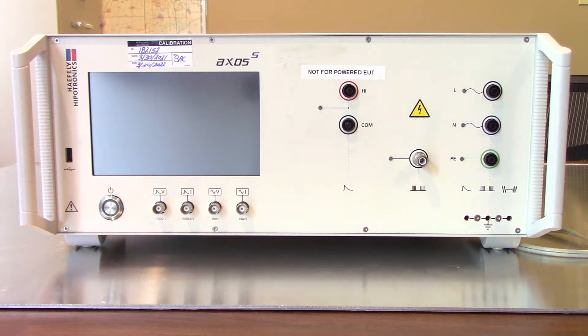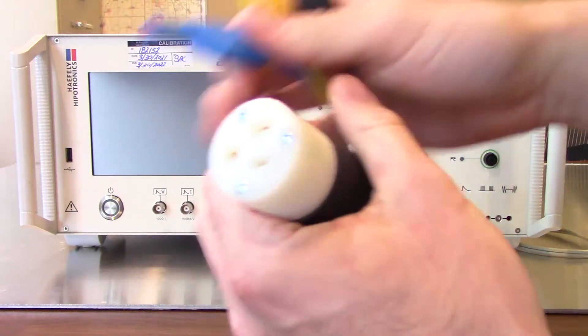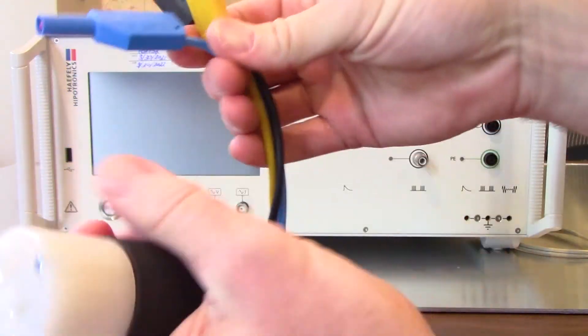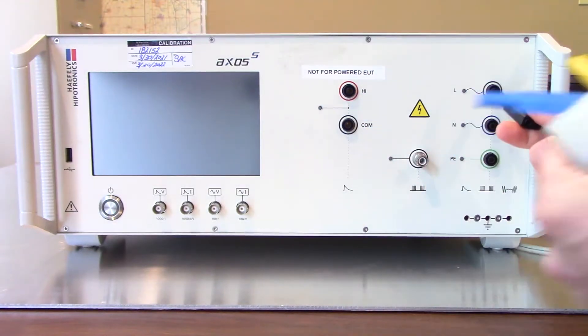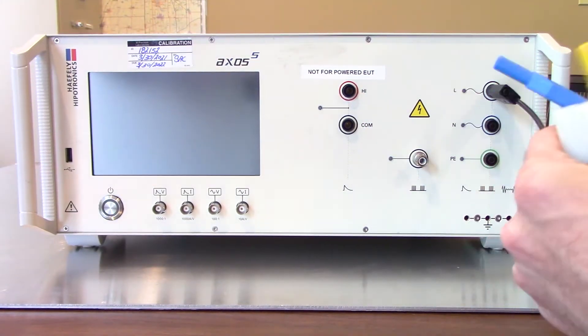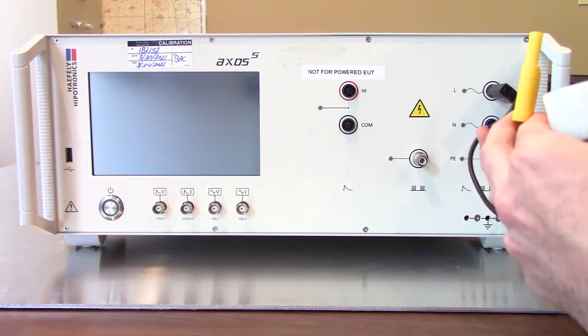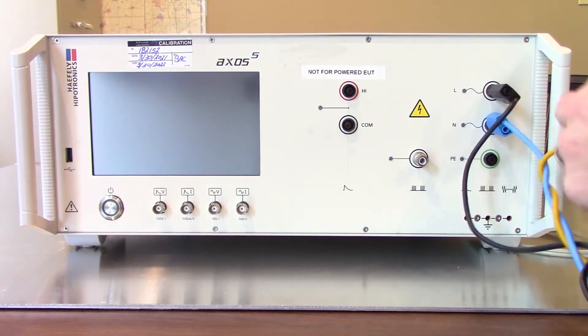When you receive your Haefeli Axos 5 rental system, it'll come with a couple different cables. One of them is going to be a female NEMA as well as recessed banana jack cables which are going to be connected to it, and these are just going to go right to the corresponding connectors on the generator. So we have our line one, we have our neutral, and following that we have our ground.